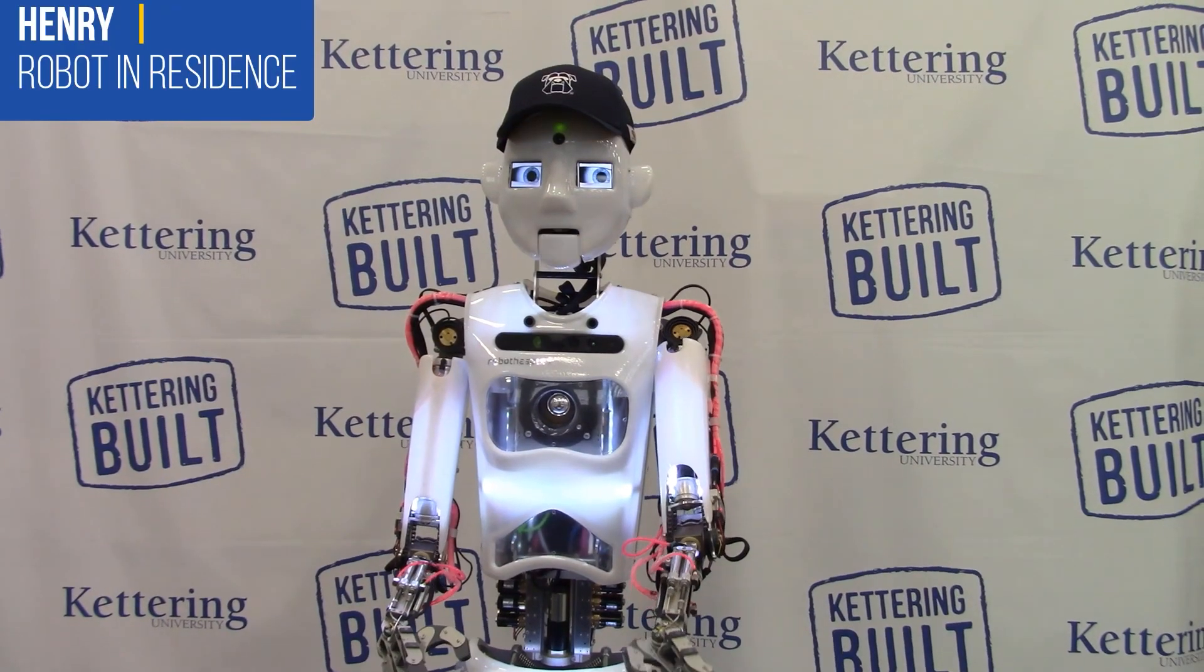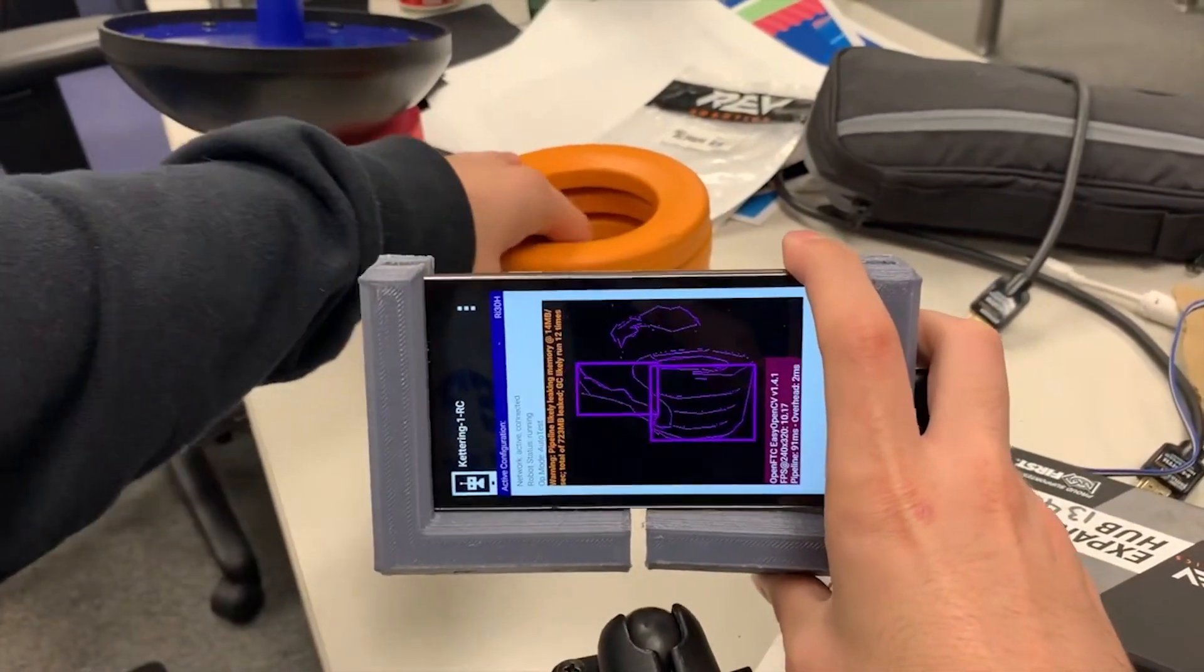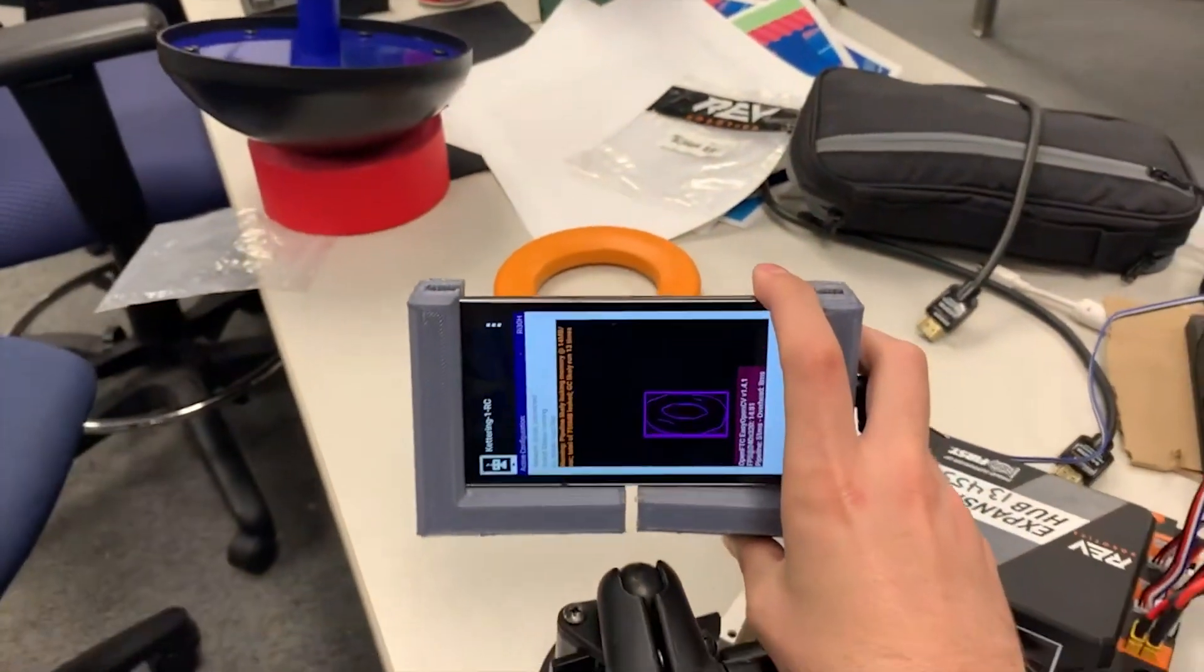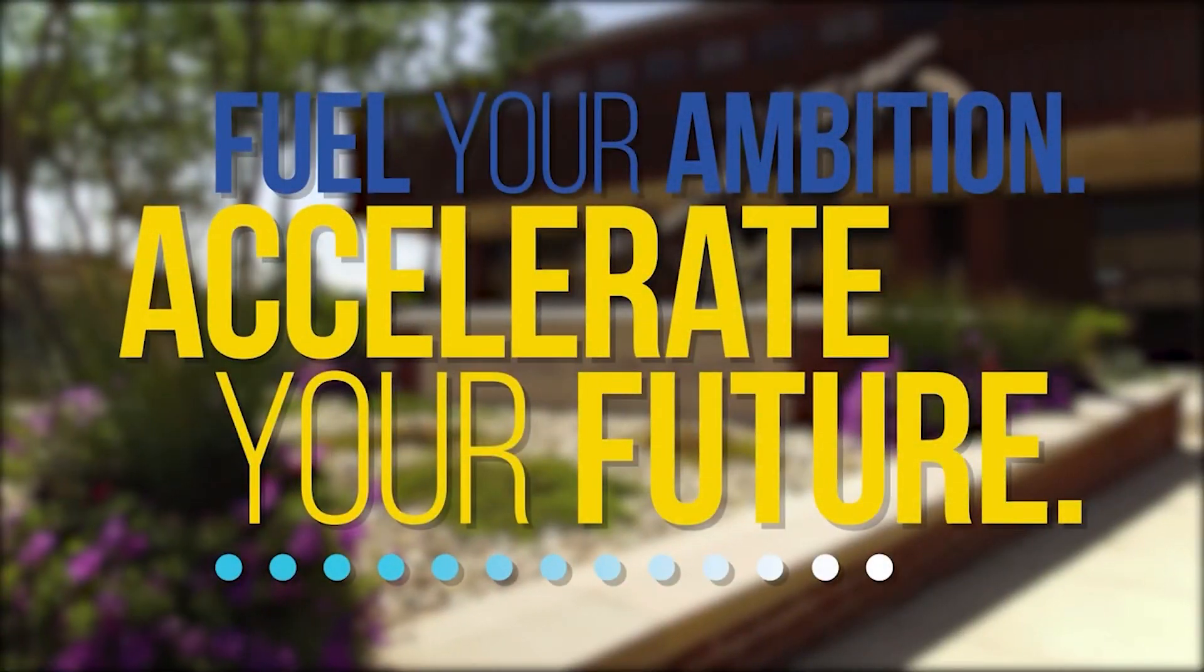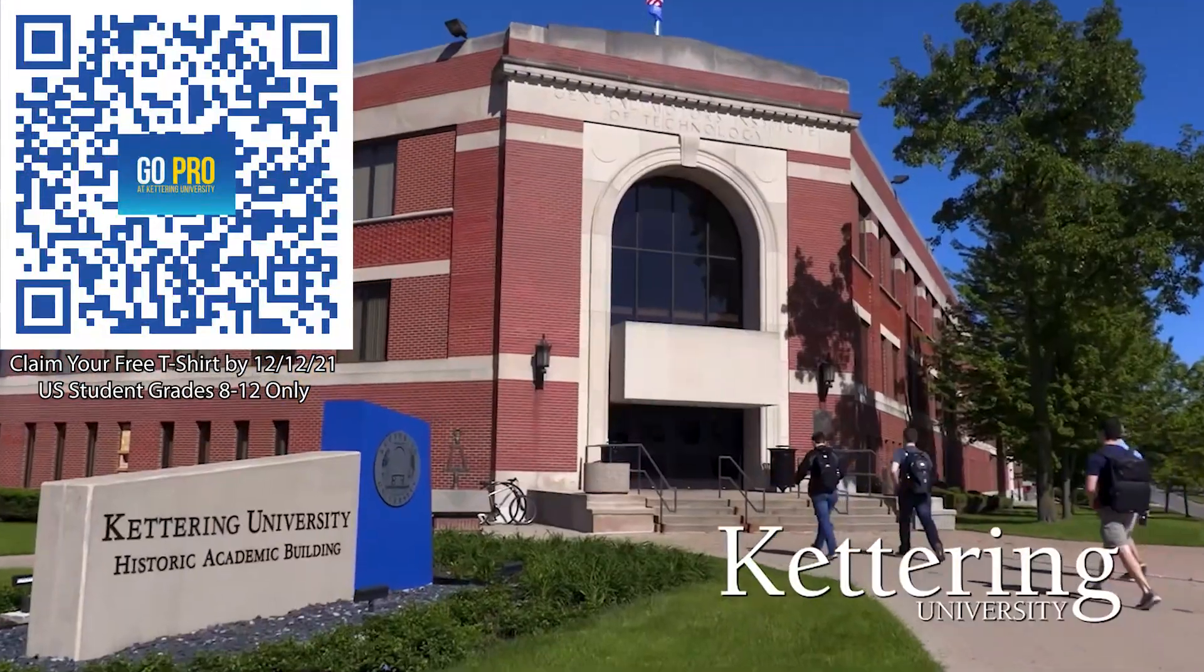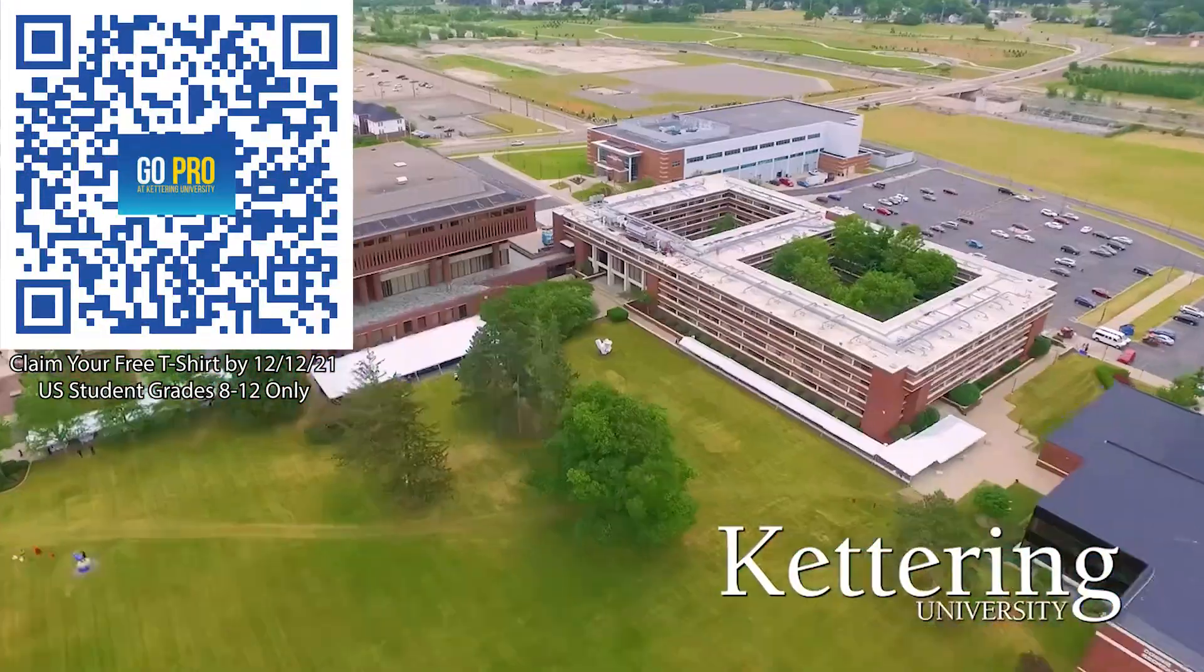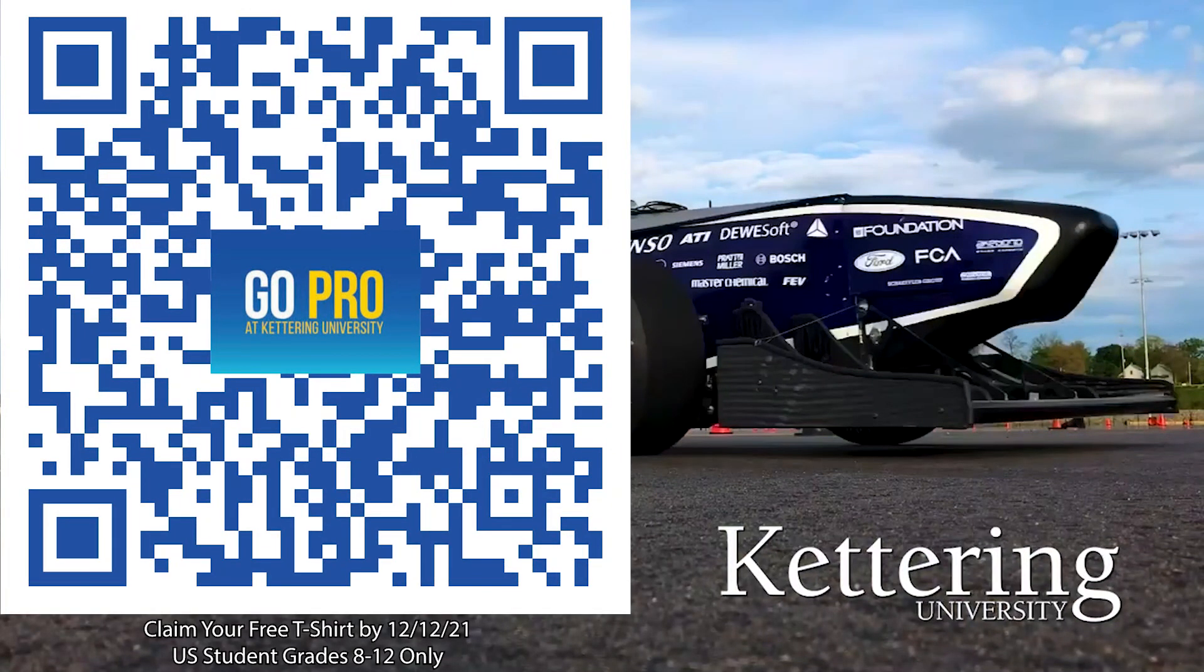On average, Kettering students earn $45,000 to $70,000 over the course of their co-op program to help them graduate debt-free. 99% of students qualify for a merit scholarship and you can apply for one of the 80-plus FIRST scholarships worth up to $25,000 each. If you are a U.S. student grades 8 through 12, scan the QR code to stay up to date on info and events happening at Kettering and get a free Kettering t-shirt when you sign up by December 12, 2021.